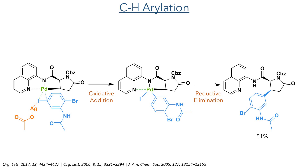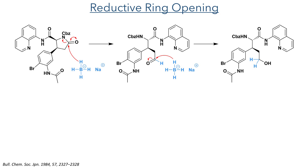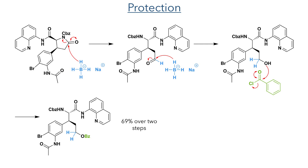Taking this forward, they then performed a reductive ring opening using sodium borohydride. The hydride attacks the lactam, initially forming a hemiaminal that can then open to produce the aldehyde and the amine. This aldehyde is further reduced by another equivalent of sodium borohydride, and the primary alcohol produced by this reaction was then protected using benzoyl chloride.